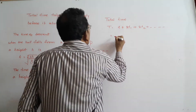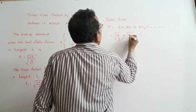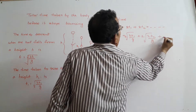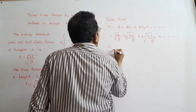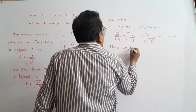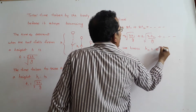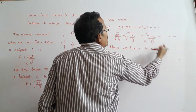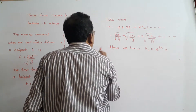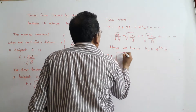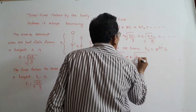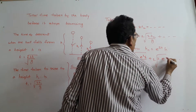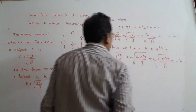What is T? T is equal to the square root of 2H by g, plus 2 times the square root of 2H1 by g, plus 2 times the square root of 2H2 by g, plus and so on. We know H1 equals e² times H, H2 equals e⁴ times H, and so on. Therefore, T equals the square root of 2H by g, plus 2 times the square root of 2·e²H by g, plus 2 times the square root of 2·e⁴H by g, and so on.